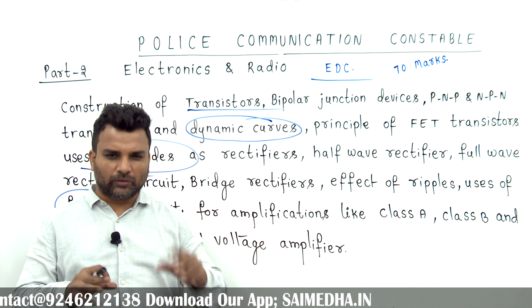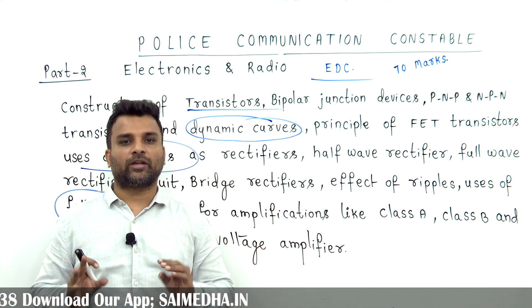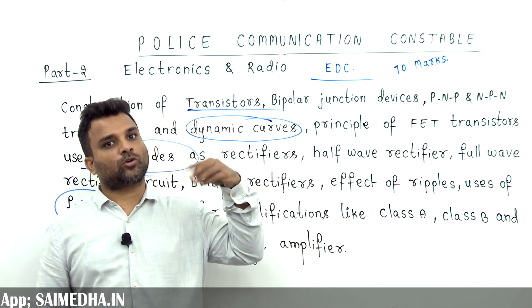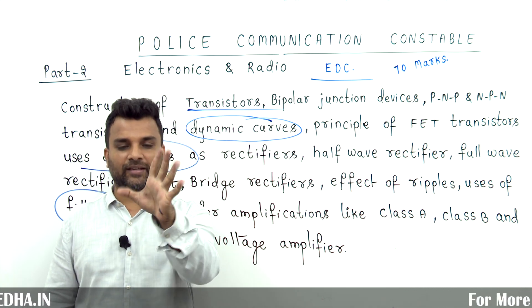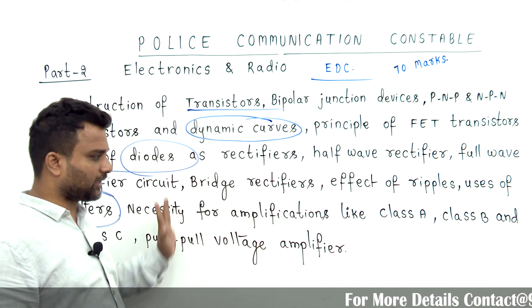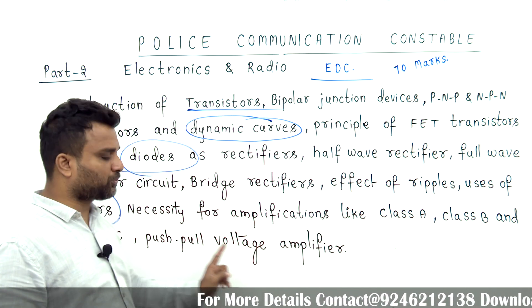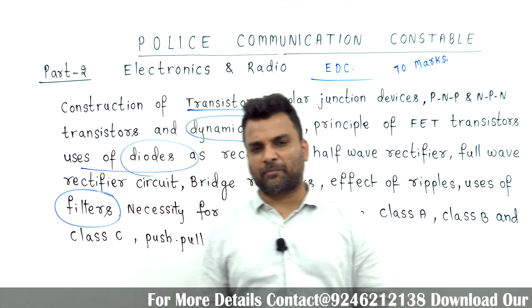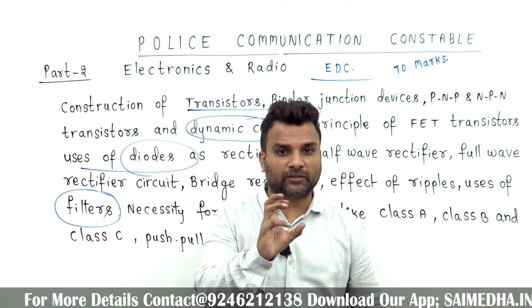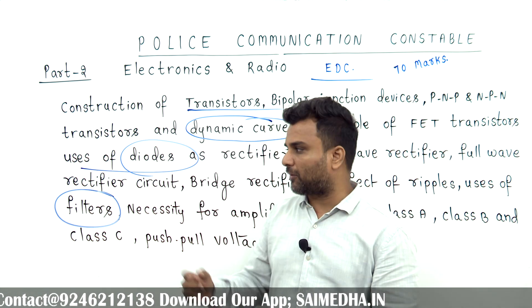What I am going to say here is: the first preparation is to start with awareness so that your journey is very easy. In the syllabus, the next topic after filters is amplifiers — Class A, Class B, Class C, and Push-Pull voltage amplifiers. Then power amplifiers: Class A, Class B, conduction angle, efficiency, power amplifier problems and advantages.